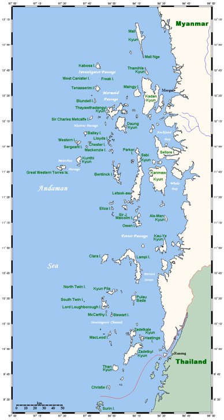Oceanic islands are mainly of volcanic origin, and widely separated from any adjacent continent. The Hawaiian Islands and Easter Island in the Pacific, and Eel Amsterdam in the South Indian Ocean are examples.